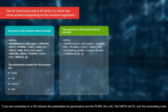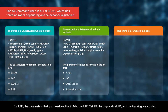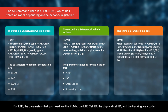If you are connected on a 3G network, the parameters for geolocation are the PLMN, the LAC, the UMTS cell ID, and the scrambling code. For LTE, the parameters that you need are the PLMN, the LTE cell ID, the physical cell ID, and the tracking area code.